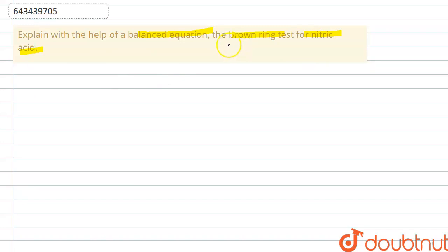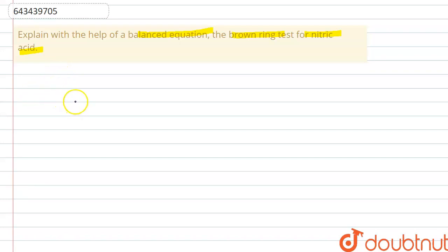In the brown ring test, we take the unknown solution in a test tube and then add freshly prepared ferrous sulfate solution to it.